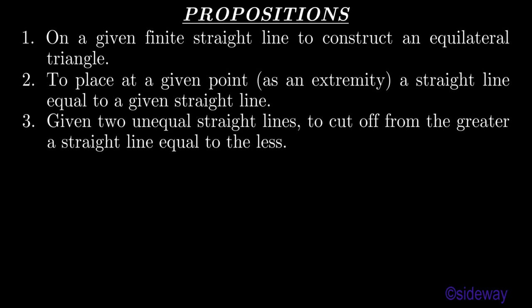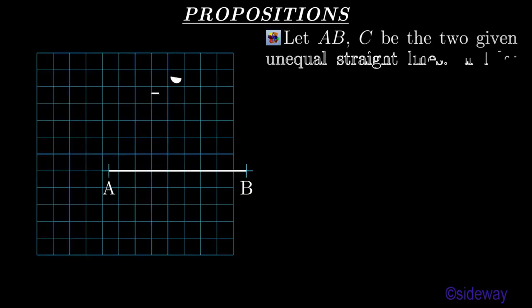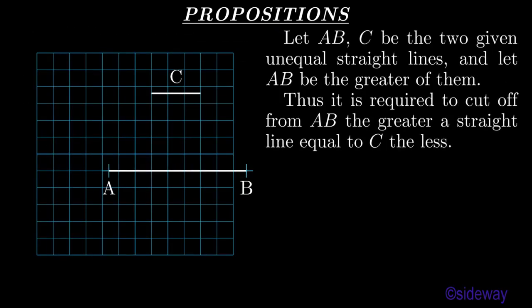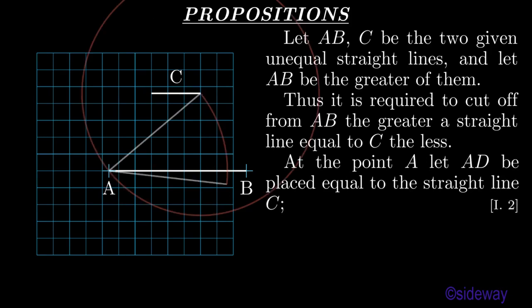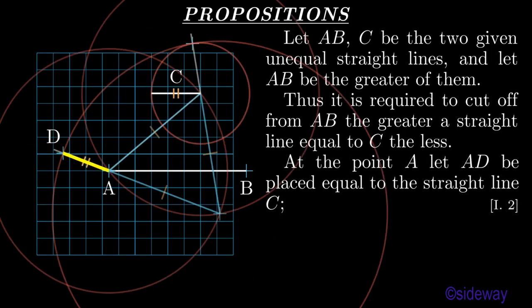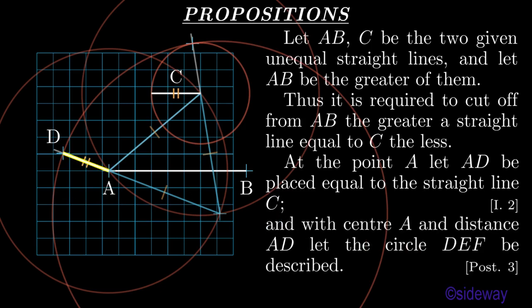Proposition 3: Given two unequal straight lines, to cut off from the greater a straight line equal to the less. Let AB and C be the two given unequal straight lines, and let AB be the greater of them. Thus it is required to cut off from AB the greater a straight line equal to C the less. At the point A, let AD be placed equal to the straight line C, by Book 1 Proposition 2. And with center A and distance AD, let the circle DEF be described, by Book 1 Postulate 3.